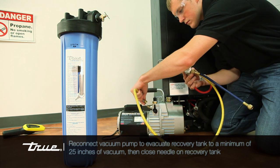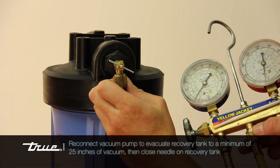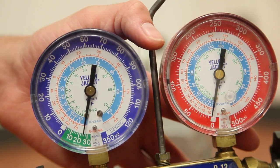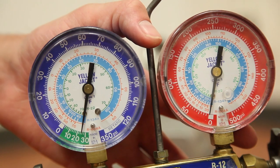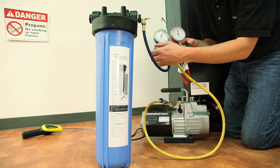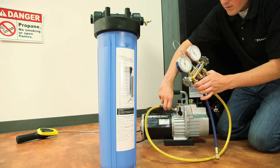Reconnect the vacuum pump and again evacuate the recovery tank to a minimum of 25 inches of vacuum. After a minimum of 25 inches of vacuum is achieved, close the needle valve on the tank along with the knob on your gauges, and disconnect the hoses from both the tank and the vacuum pump.